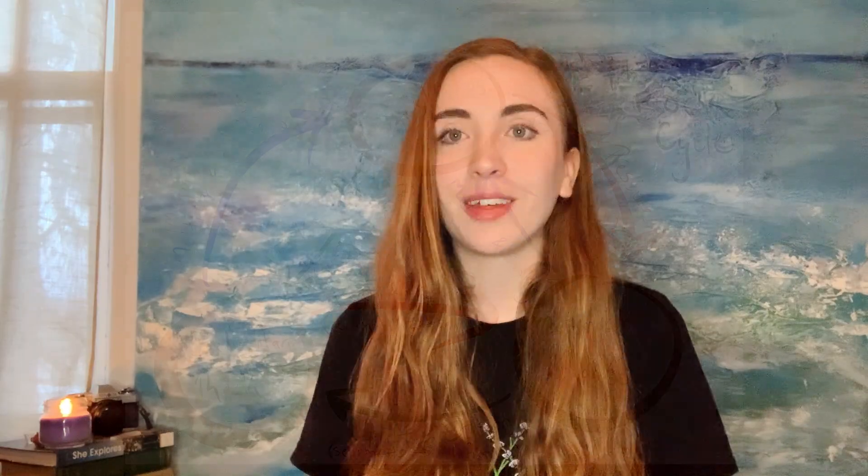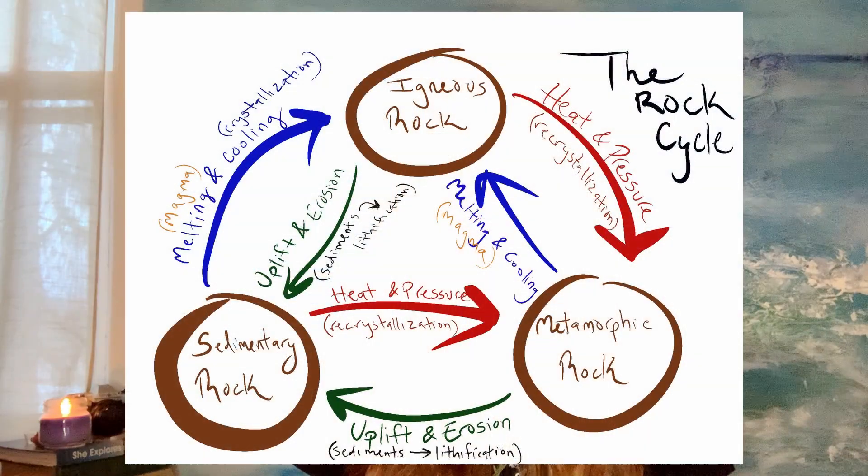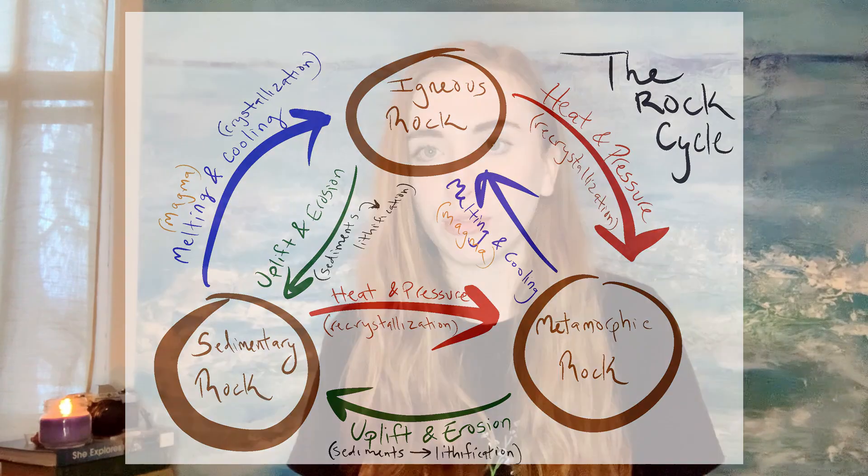There are three main types of rocks on the planet: sedimentary, metamorphic, and igneous. Some of these rocks have undergone all parts of the rock cycle, while some have only experienced one or two. The rock cycle is how we understand how rocks get from one phase to another through many different geologic processes.